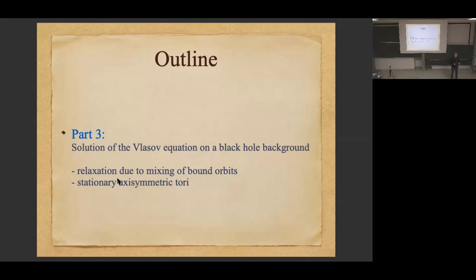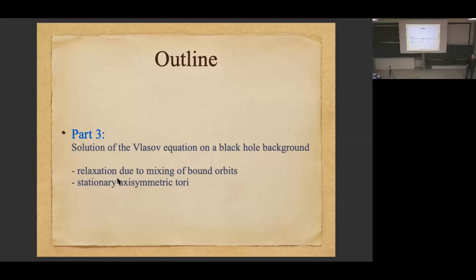The first thing is about dynamics. The idea is: how should the distribution function look? Originally the distribution function depends on seven variables — the time variable and six others: three space variables and three momentum variables if you're on the mass shell. That's a lot of freedom, but as I'm going to show you, in some cases you can assume that the gas will relax to a kind of stationary state, and then out of these seven variables you end up with a distribution function of just three variables — a great simplification.